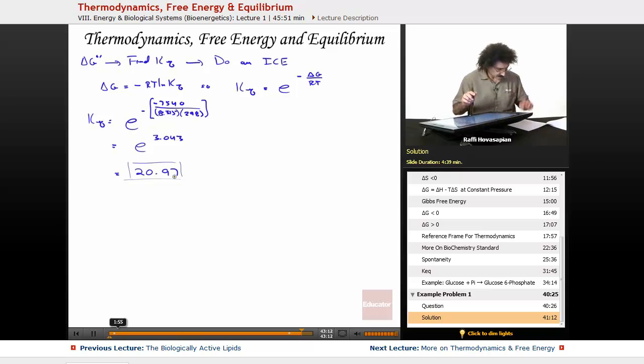Let's write our reaction. Glucose 1-phosphate is going to reach some sort of an equilibrium with glucose 6-phosphate. We're going to have an initial concentration, we're going to have the change that takes place, and then we're going to have an equilibrium concentration. This is what we're concerned with, ultimately.